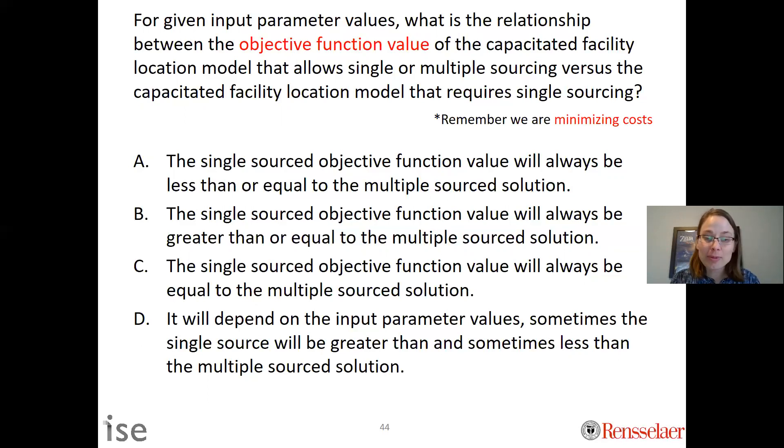The correct answer to this problem is B—that the single source objective function value will always be greater than or equal to the multiple source solution. Said another way, the single sourced requirement will either be the same or worse in terms of a solution than the one that we can have single or multiple sources.